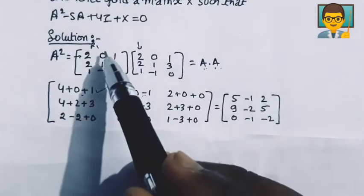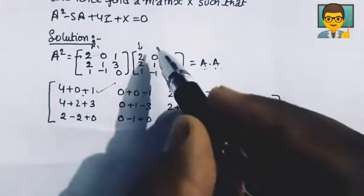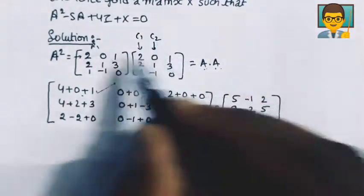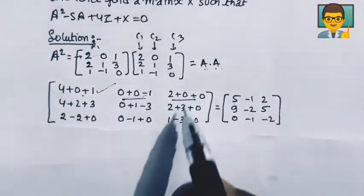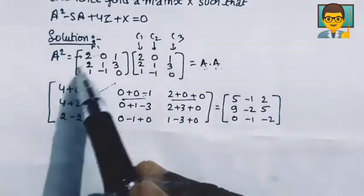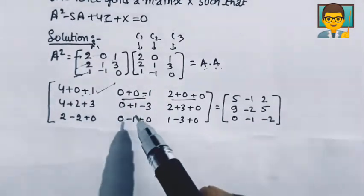Similarly, we have first row and column number 2, then first row and column number 3. So this is the value of R2 and R3. And this is the multiplication we have learned.